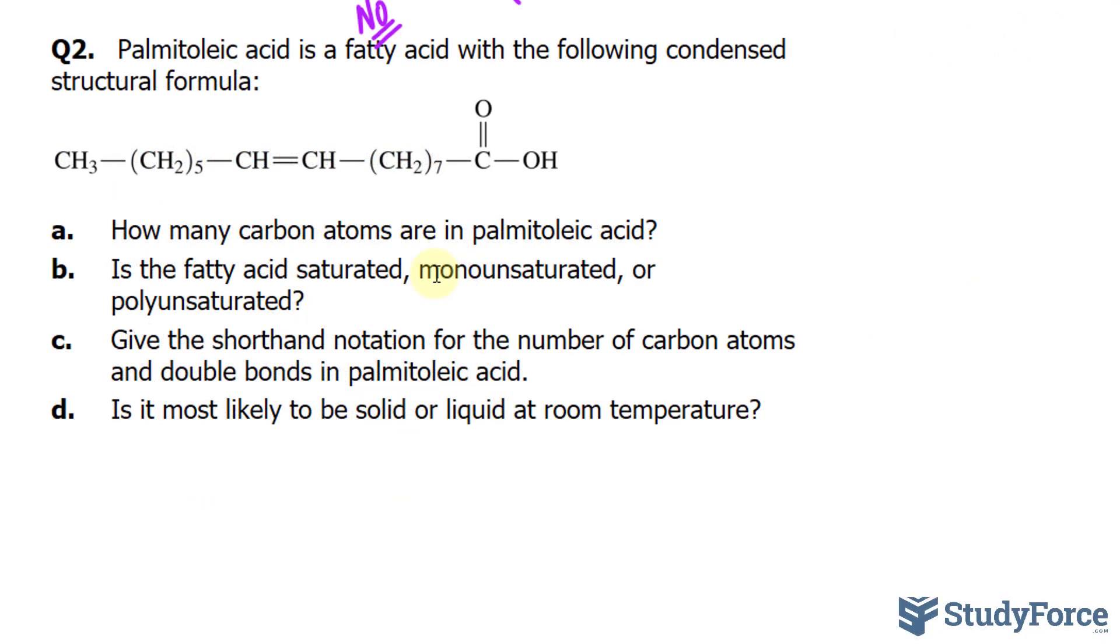Moving on to question number two, this time we have palmitoleic acid. It's a fatty acid with the following condensed structural formula. How many carbon atoms are in palmitoleic acid? So, we'll start by counting this carbon, and then we have CH2 with this subscript 5, which means 5 carbons. So, 1 plus 5 is 6, 7, 8, another 7 of those makes it 15, 16. So, we have 16 carbons.